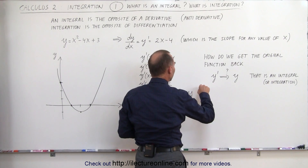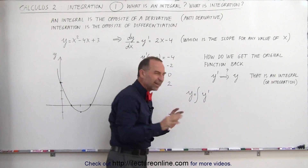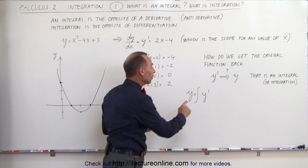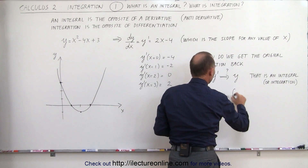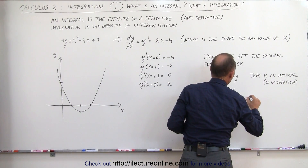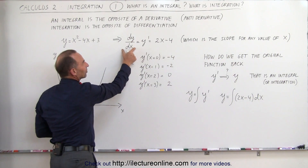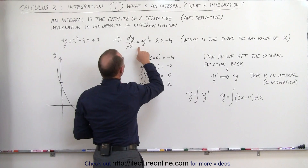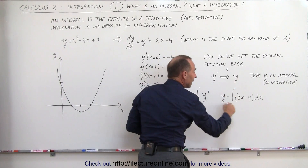The symbol for that is as follows. We can say that y is the integral of y prime. That little S symbol means integration — we're going to integrate y prime. More properly written: y is equal to the integral of this derivative, which is 2x minus 4, and we write times dx. Whenever we take a derivative we have that dx, so we put the dx back over here, writing it as 2x minus 4 times dx. So y prime or dy goes in there, and to find y, we take the integral of that.